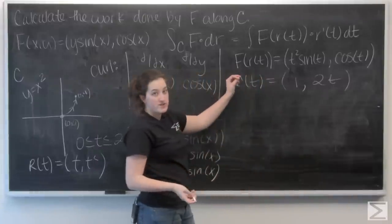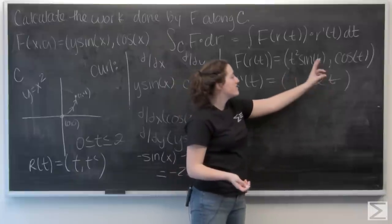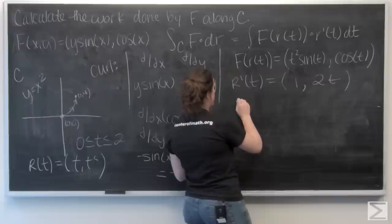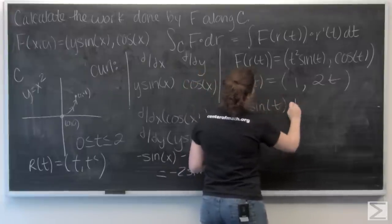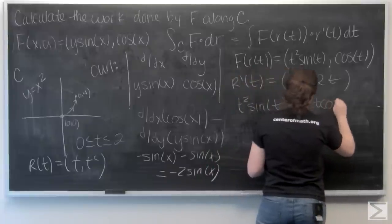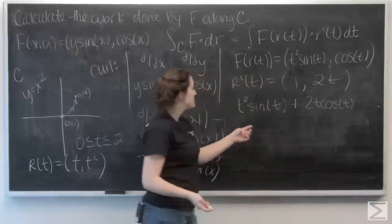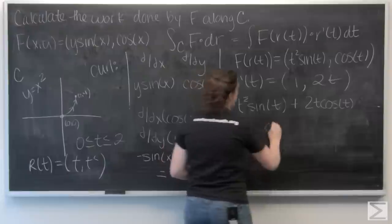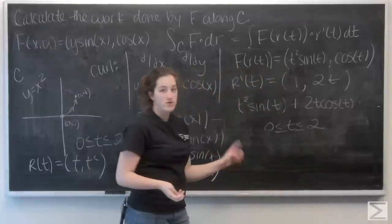Now I want to take the dot product of these two vectors. To do that, it's the product of the i components plus the product of the j components. So that gives 1 times t² sine of t, plus 2t times cosine of t. Now I just want to integrate this with respect to t over the interval from t equals 0 to t equals 2.